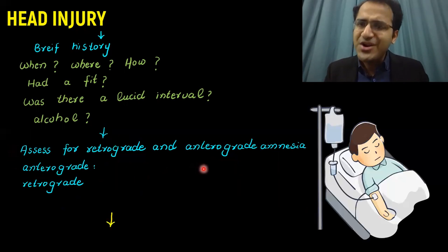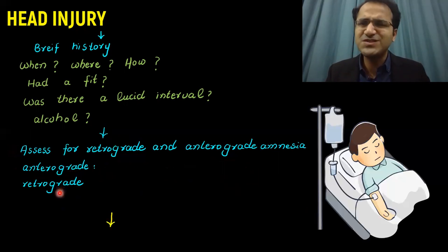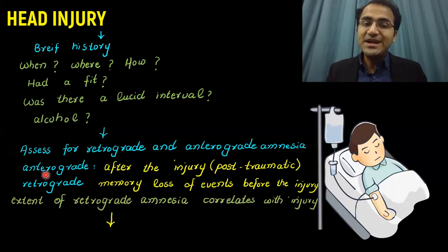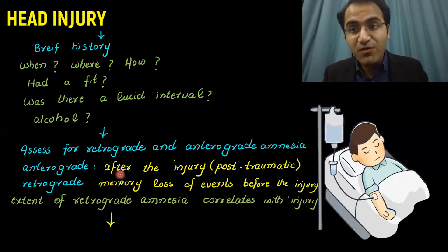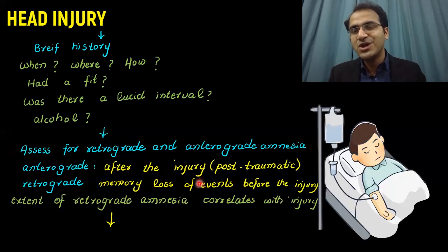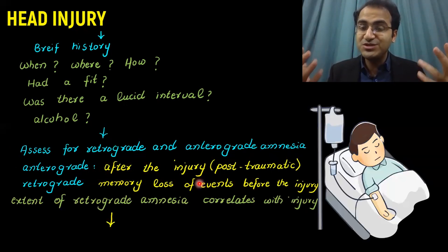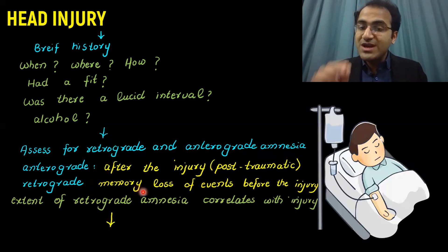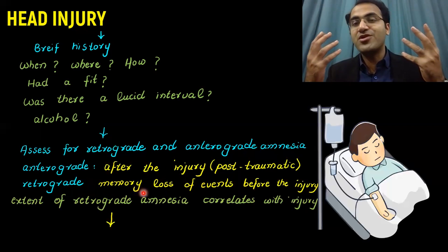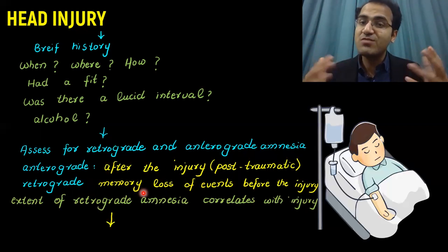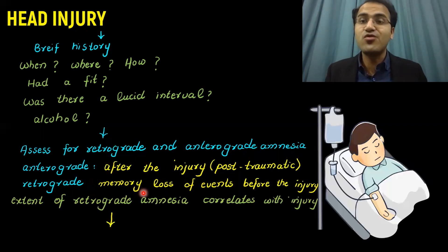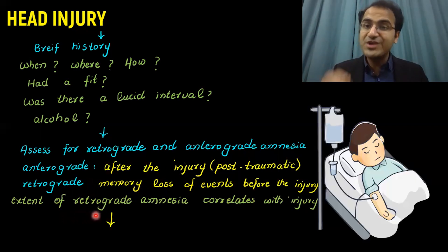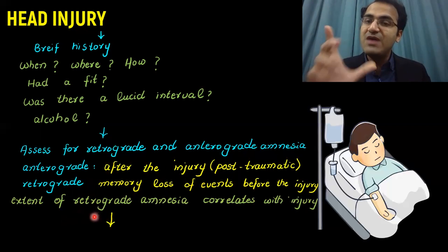Assess for retrograde and anterograde amnesia. Anterograde amnesia is memory loss after the injury — post-traumatic memory loss where the patient cannot form new memories. Retrograde amnesia is memory loss of events before the injury — the patient cannot remember relatives or even their own name. The extent of retrograde amnesia correlates with the level of injury.